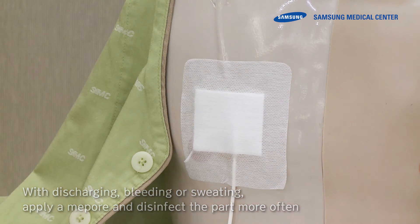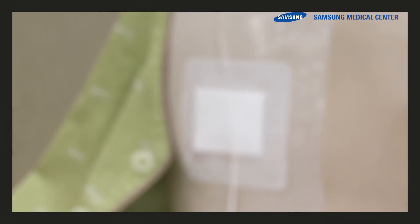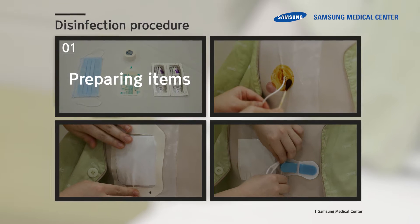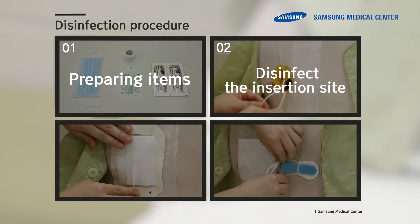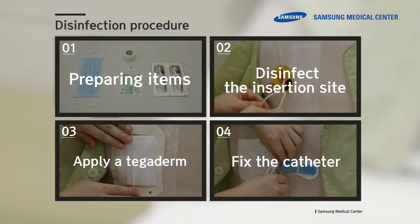The disinfection procedure involves the following steps: preparing items, disinfecting the insertion site, applying a Tegaderm, and fixing the catheter on skin. Let's look at the disinfection procedures in more detail.